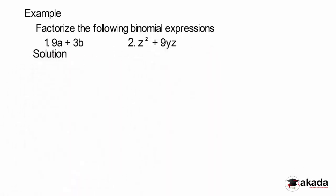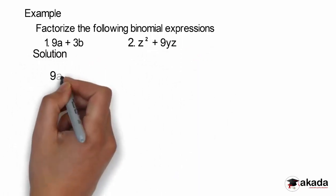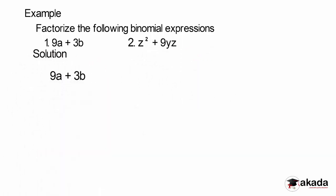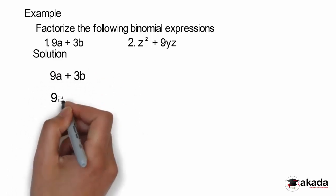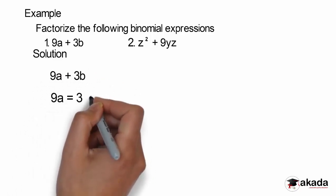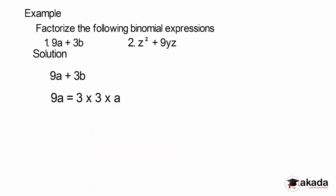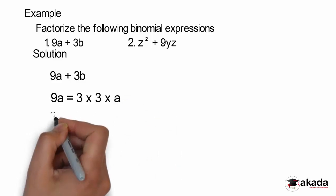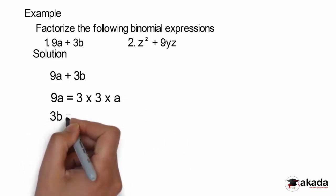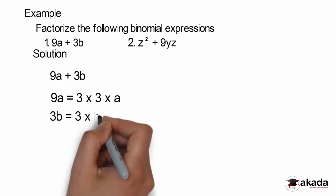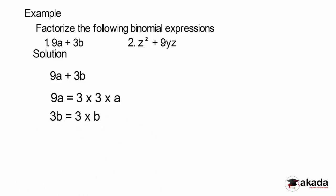For 9a plus 3b, I have the factors of 9a to be 3 multiplied by 3 multiplied by a, which gives me 9a. The factors of 3b are 3 multiplied by b, which gives me 3b.